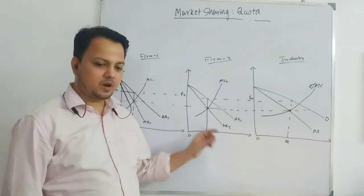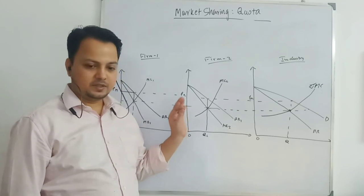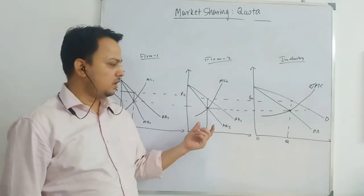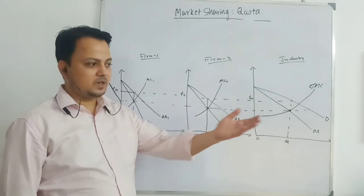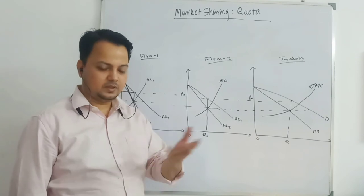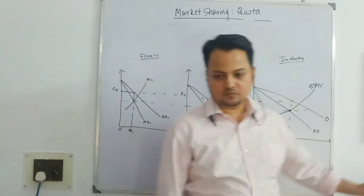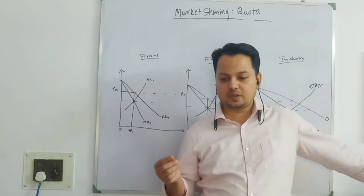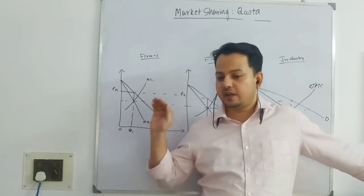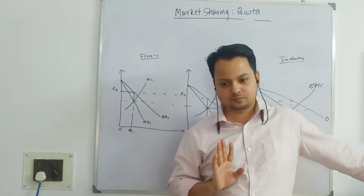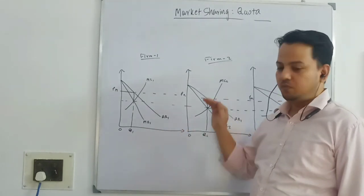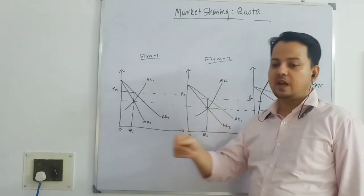If there is no entry in the industry, firms would need to charge the profit maximizing price, acting according to MR equals MC. If there is a threat to entry — when they see that a new firm is going to enter — that can increase capacity within the industry, creating excess capacity and reducing the profits earned by the existing firms. So they may agree upon a price that may not be their profit maximizing price but closer to it.